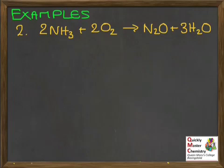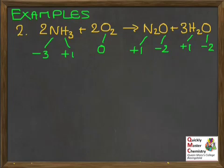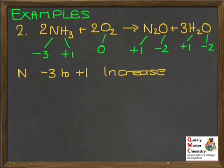Here's a second example: the reaction between ammonia and oxygen. Once again, we're going to use oxidation states to work out what has been oxidised and what has been reduced. You might want to pause the video if you're feeling confident with this skill and have a go yourself. We need to look at the oxidation state of each thing on both sides. Applying our rules, we get the N in NH3 starting at minus 3, and by the time it's in N2O on the right, it's plus 1. That's an increase in oxidation state, which means oxidation.